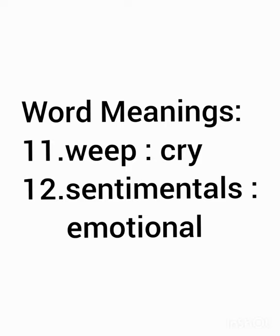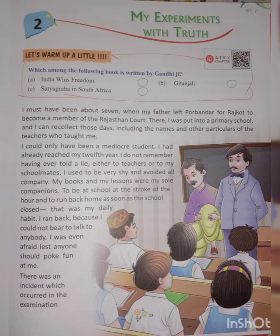With this, we have completed the word meanings. Now we will start reading the chapter, My Experiments with Truth, moving on to page number 13. 'I must have been about 7 when my father left Porbandar for Rajkot to become a member of the Rajasthan Court.'